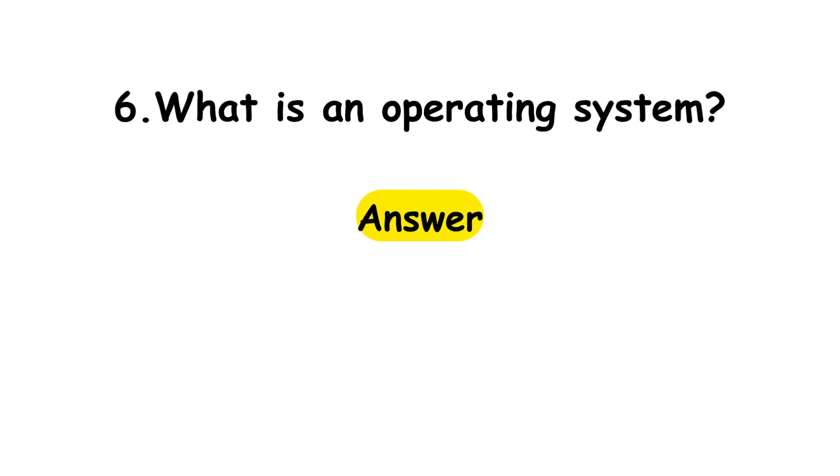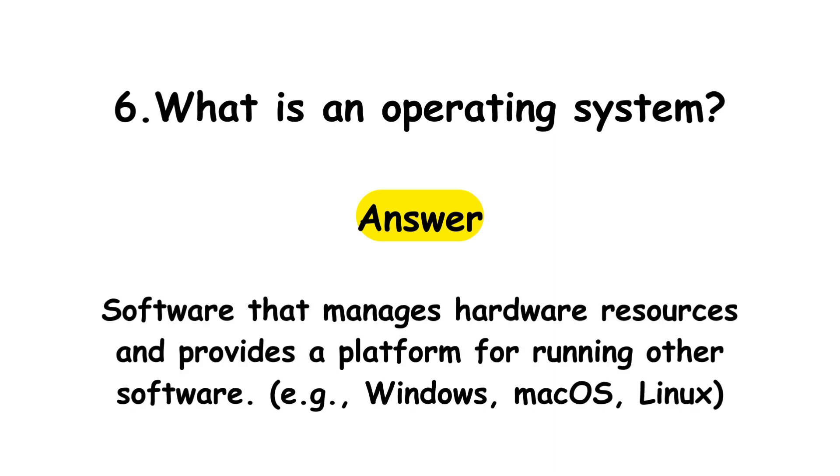Question 6: What is an operating system? Answer: Software that manages hardware resources and provides a platform for running other software. Example: Windows, Mac OS, Linux.